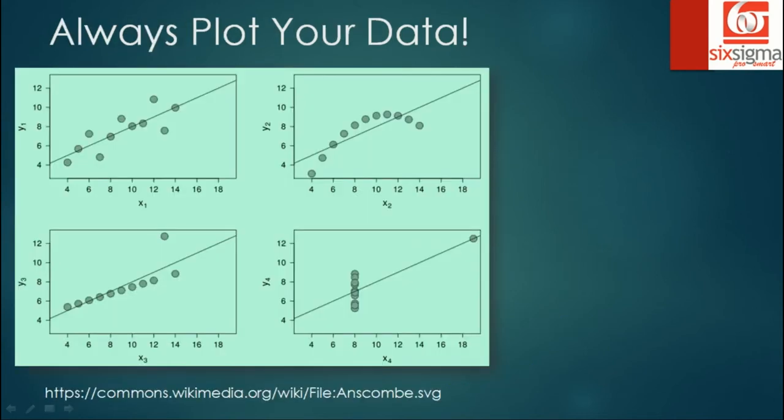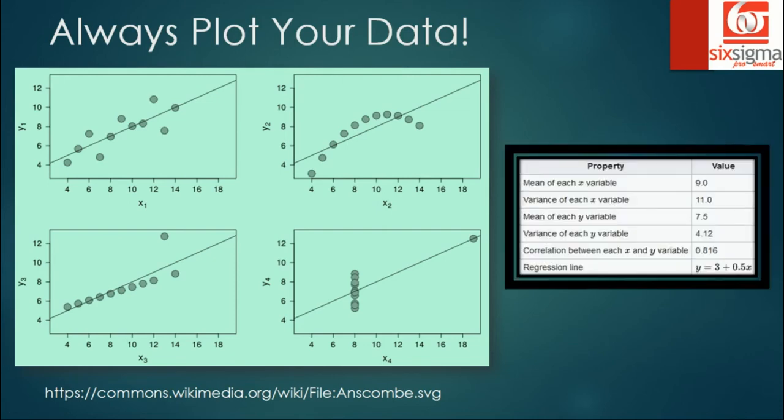Two most important takeaways from correlation, which are often misinterpreted: number one, we should always plot our data. The picture here represents Simpson's paradox. The point we're trying to cover is that all these four pictures have something in common. If you see the table on the right, the mean of x's, the variance of x's, and so is the case with y's - all averages and variances are equal. And hence, as per the formula, the Pearson's correlation that you compute is the same: 0.816. The fitted regression line would be the same. The equation is y equals 3 plus 0.5x.